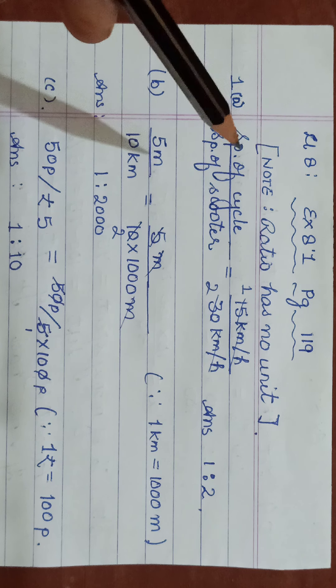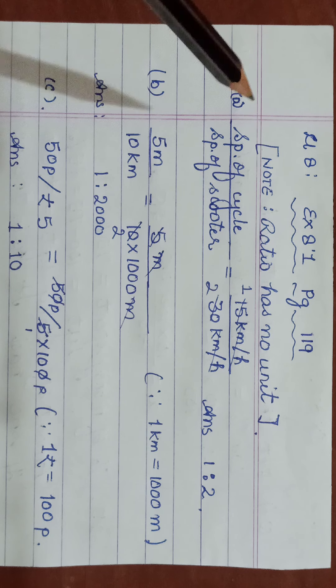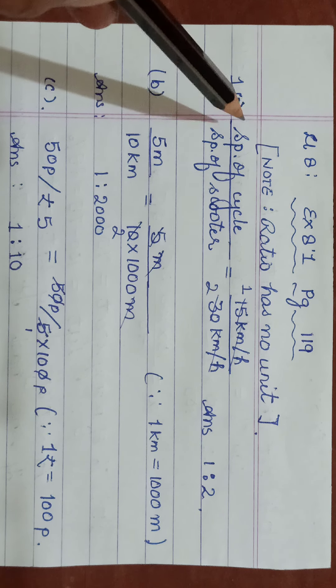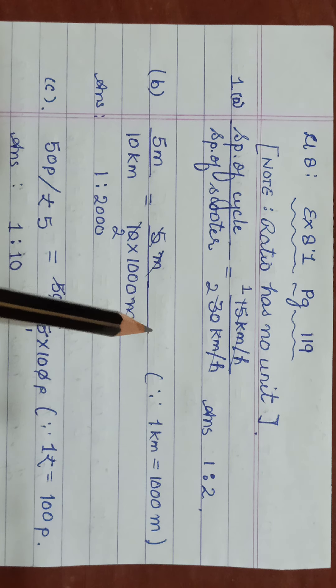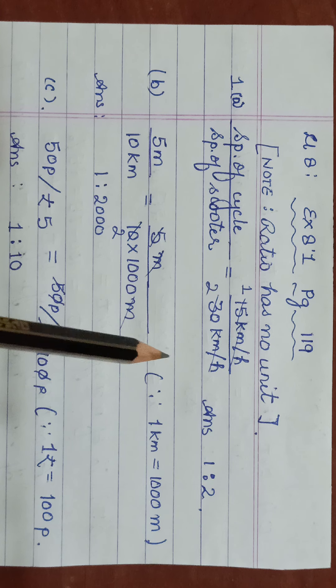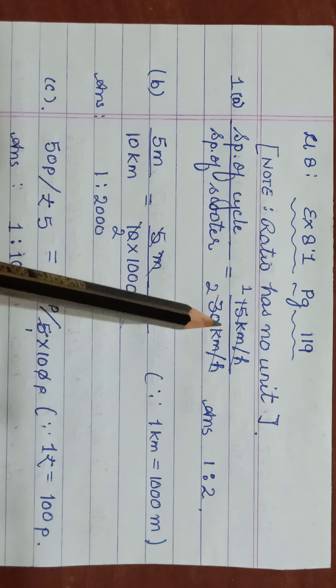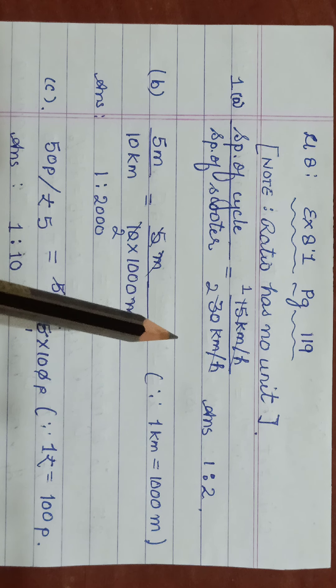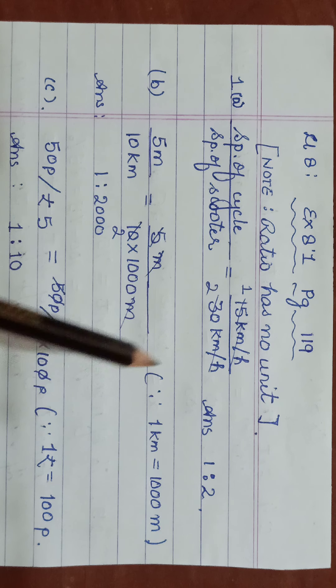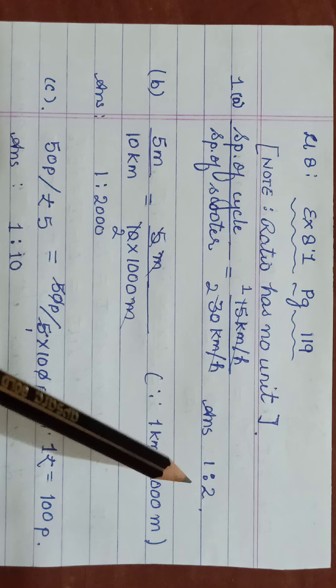We have exercise 8.1 on finding ratios and percentage. This is comparing quantities children. Ratio basically is nothing but it is comparison of two quantities, two or more quantities. What we have to keep in mind in comparison is we can compare the quantities which are having the same unit. The measurement of the unit should be the same and then this fraction obtained is termed as the ratio. So ratio is a fraction basically.